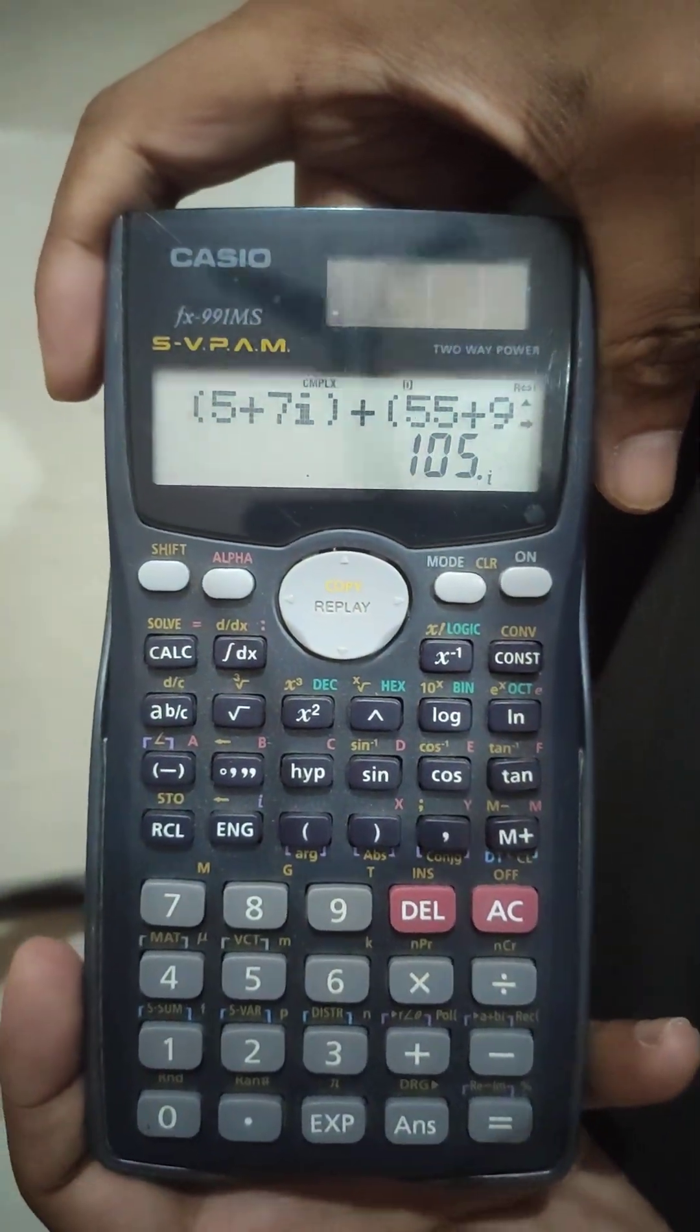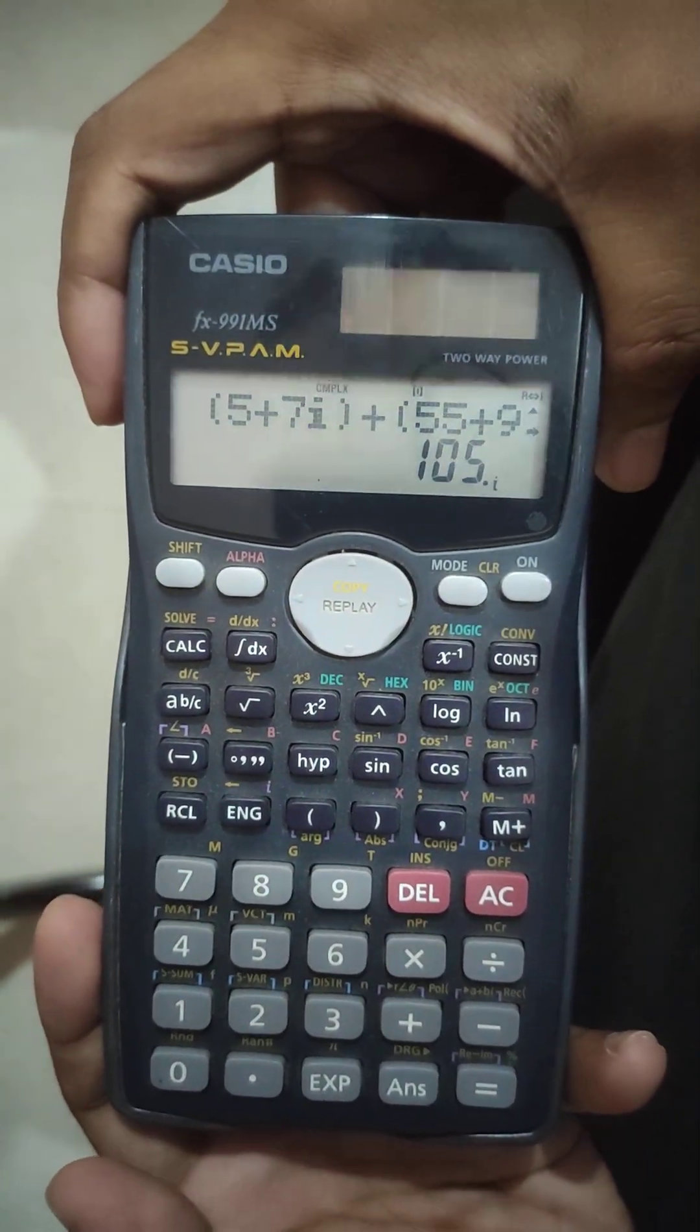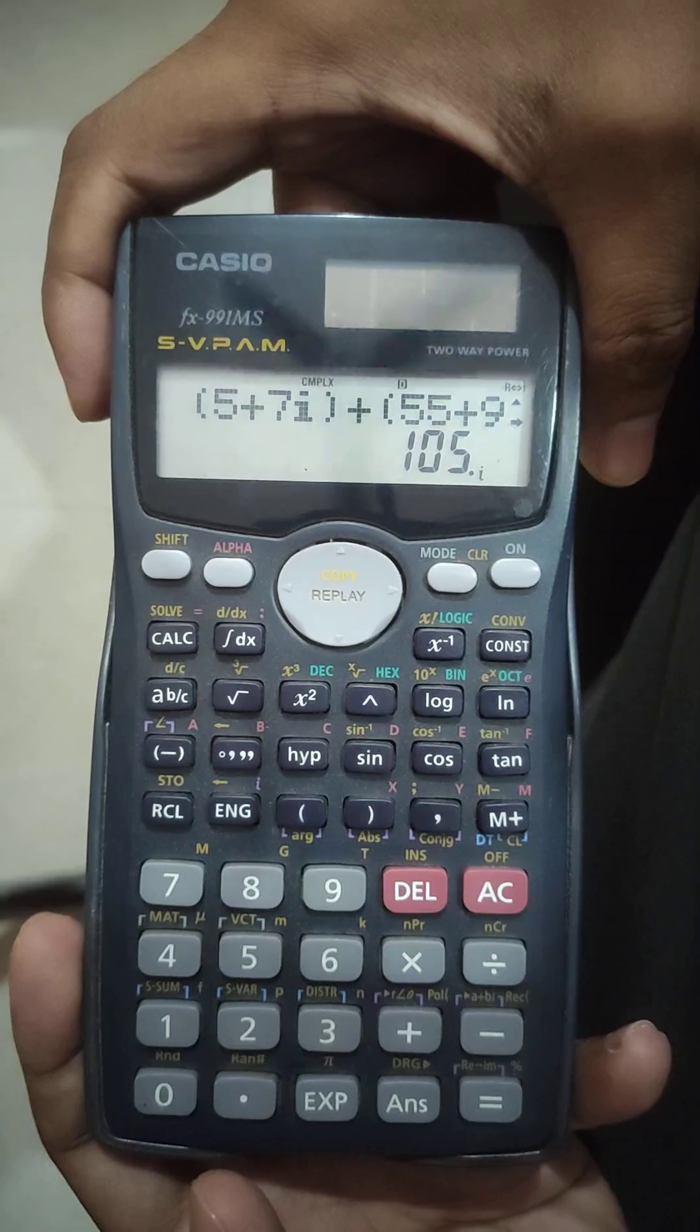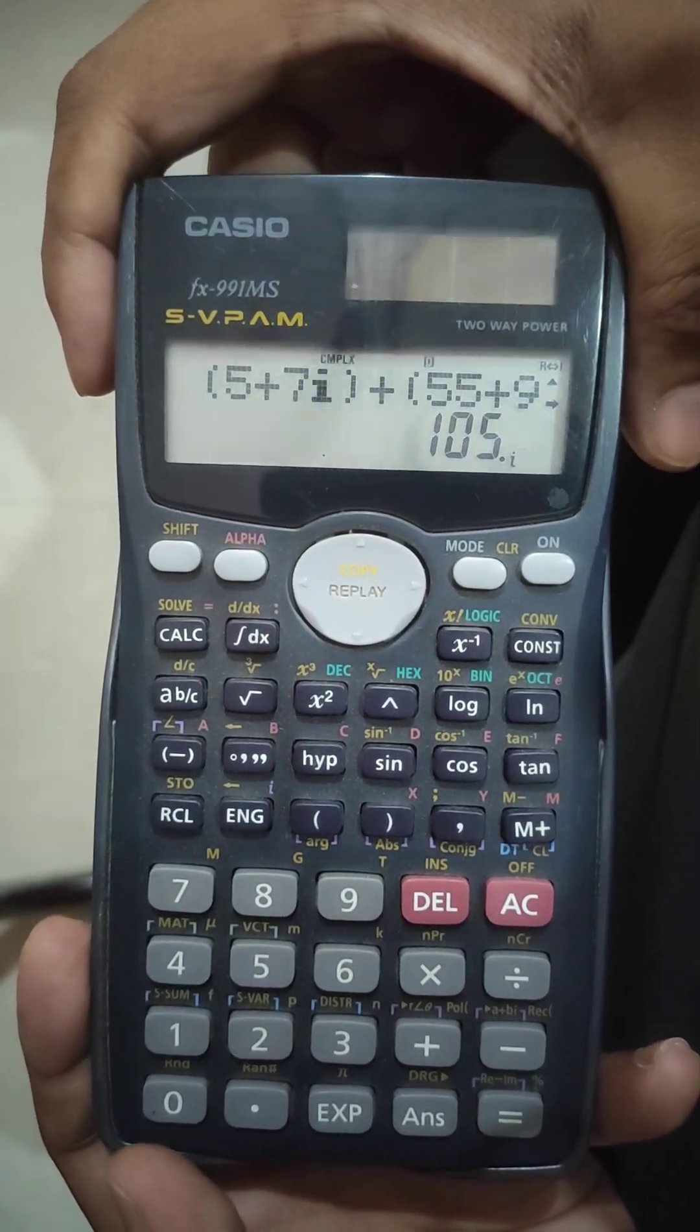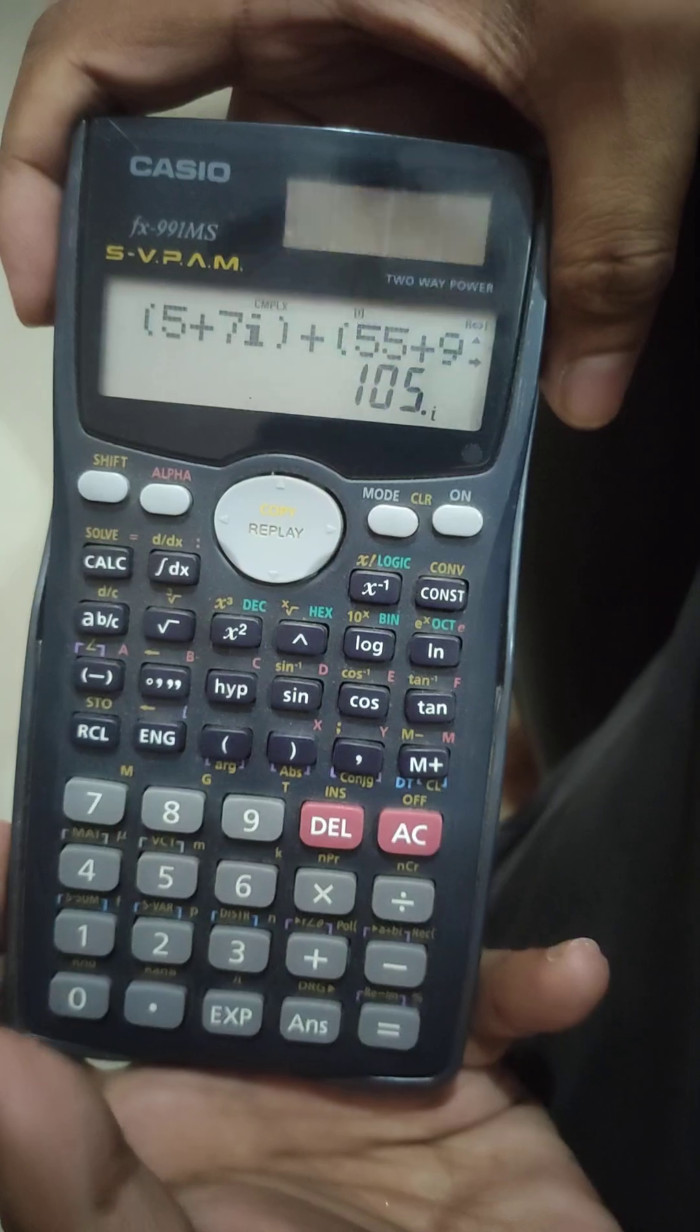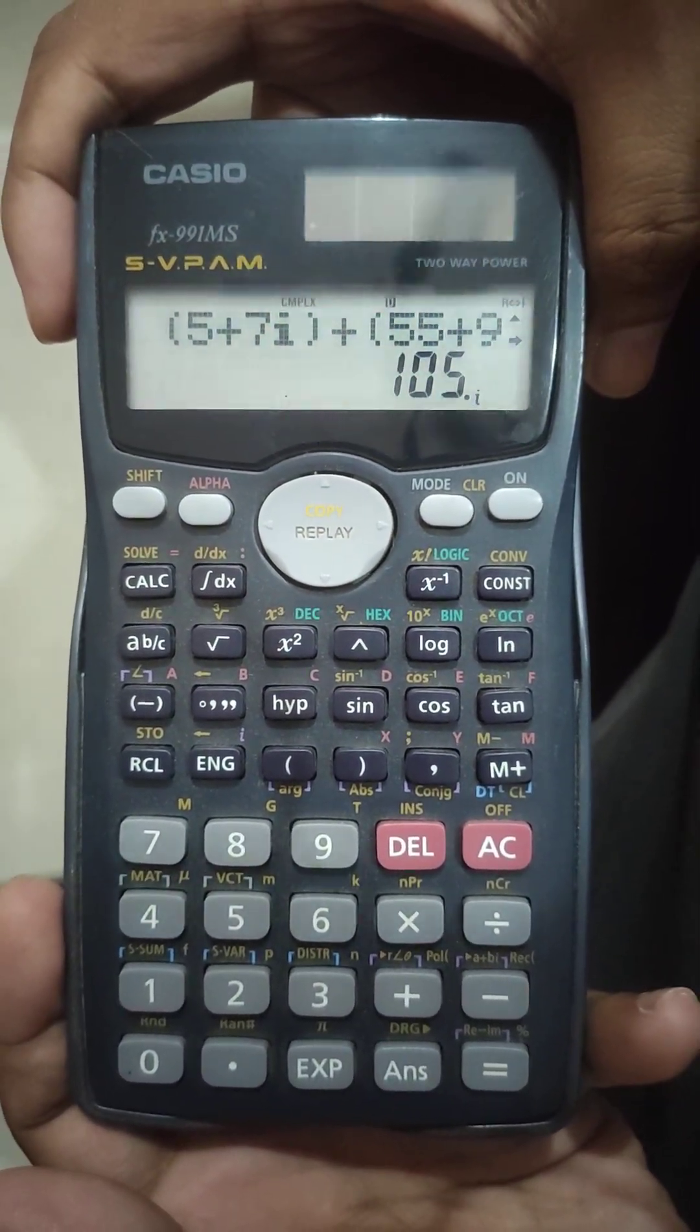So this is how you operate the complex numbers. Similar is for matrix, sorry, vector, and other. So this is how you do it. Please subscribe to my channel, I will be posting many other operations in this complex series. So tune with me.